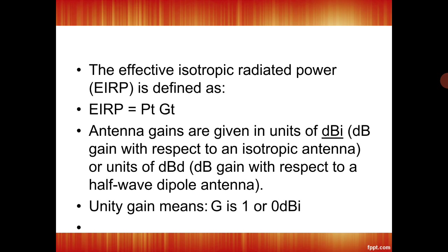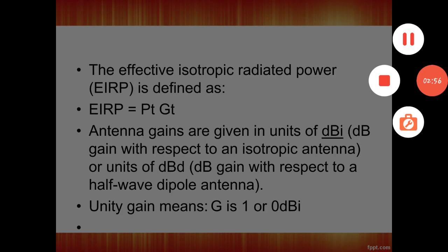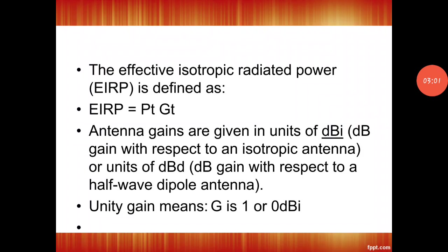An isotropic antenna radiates power and receives unity gain. The Effective Isotropic Radiated Power, EIRP, is defined as EIRP equal to PT multiplied by GT, where PT stands for transmitted power and GT stands for transmitted gain. EIRP is the multiplication of transmitted power and gain. Antenna gains are given in the unit of decibel dB or dBi — the gain with respect to the isotropic antenna — or units can be represented as dBd. Unity gain means G equal to 1, or 0 decibel.